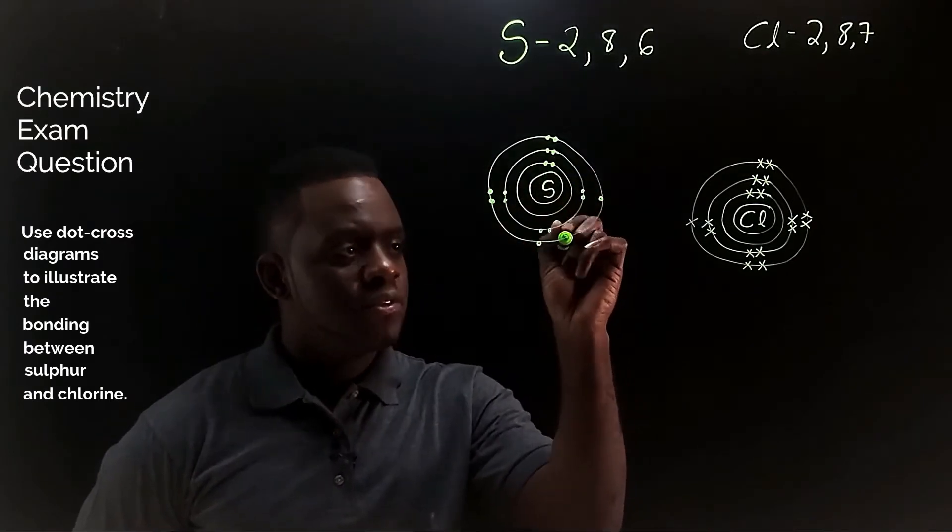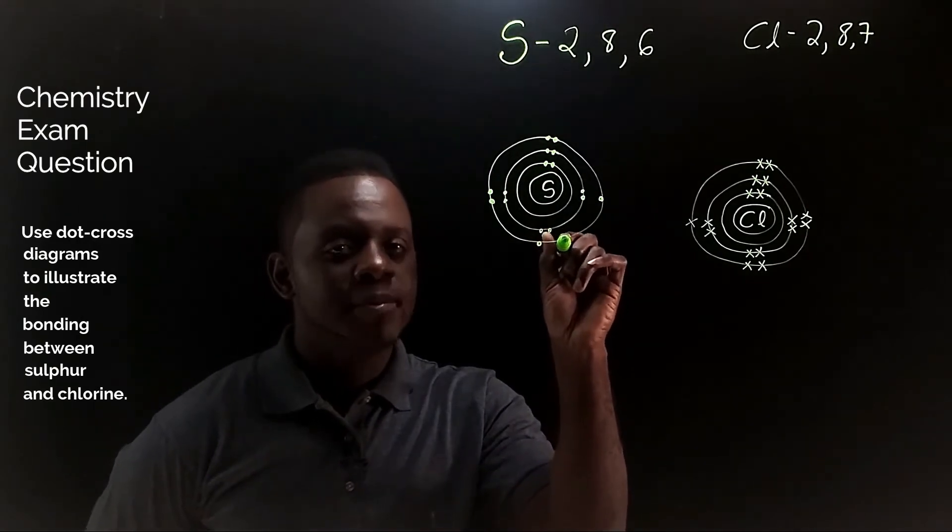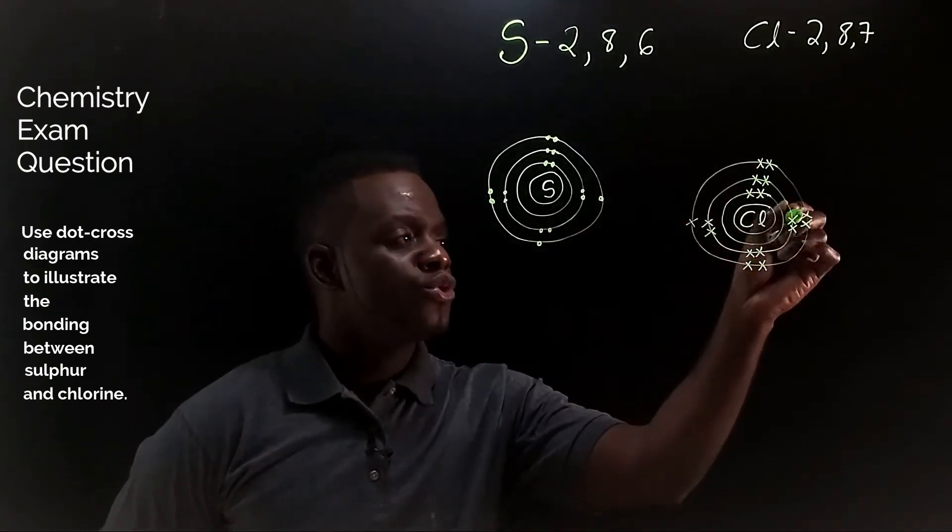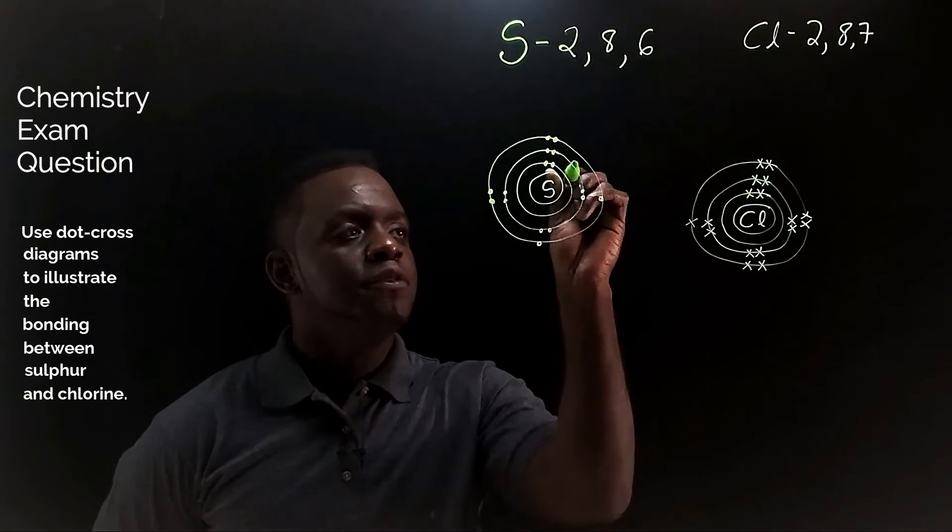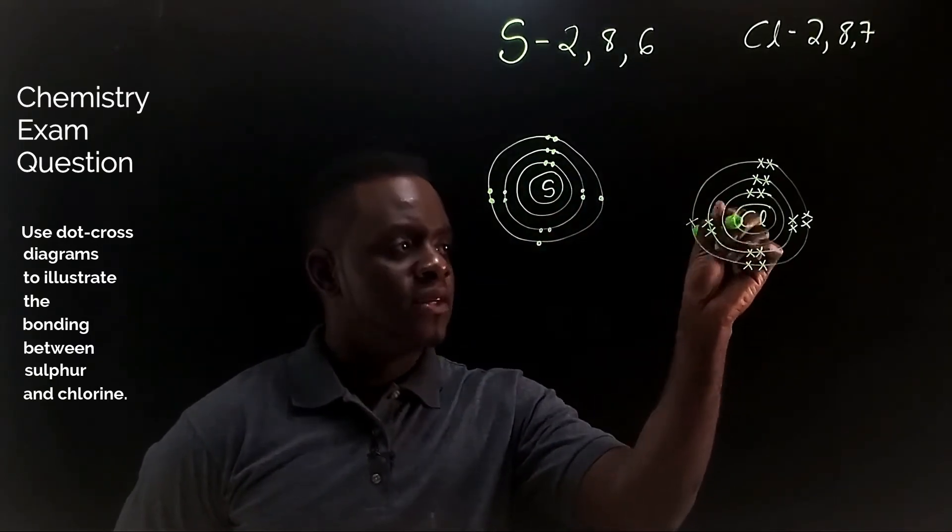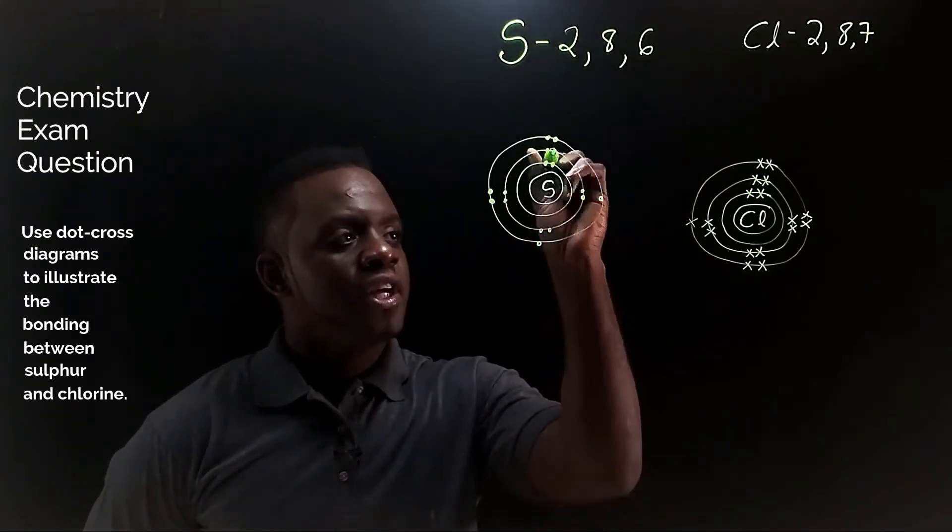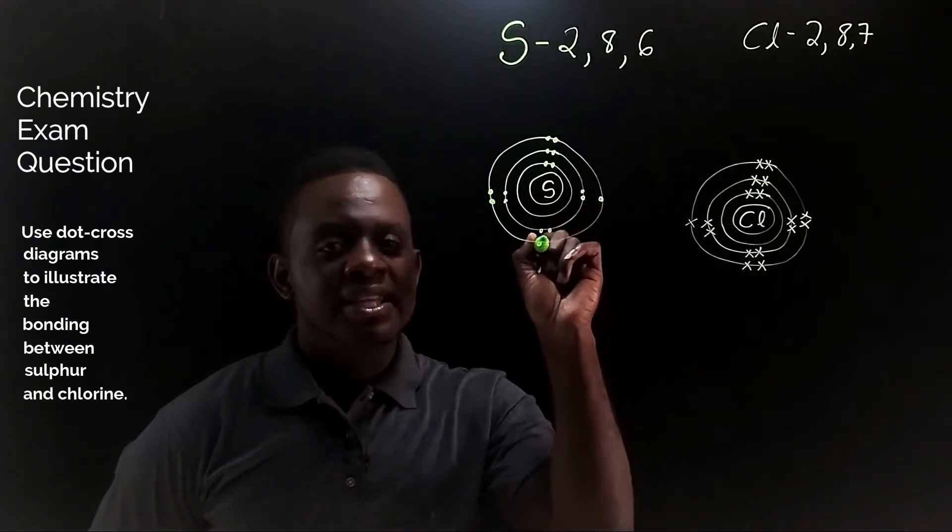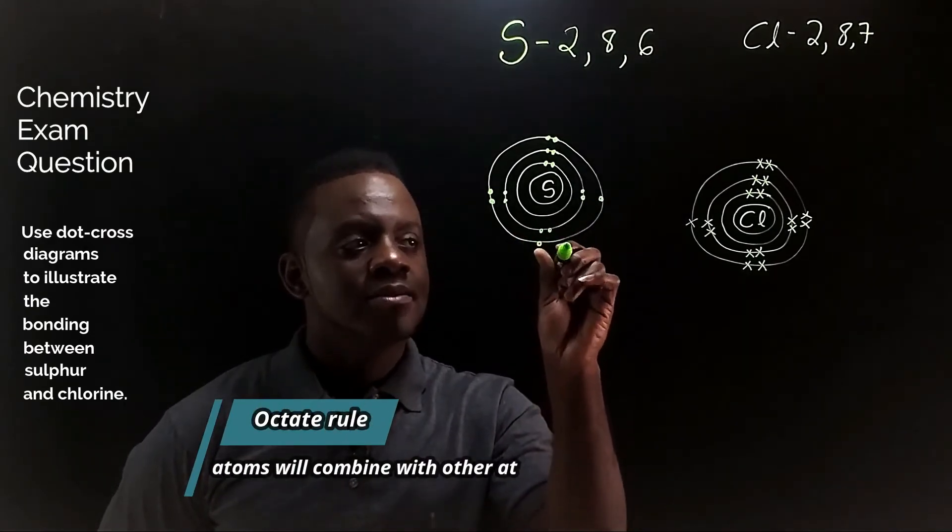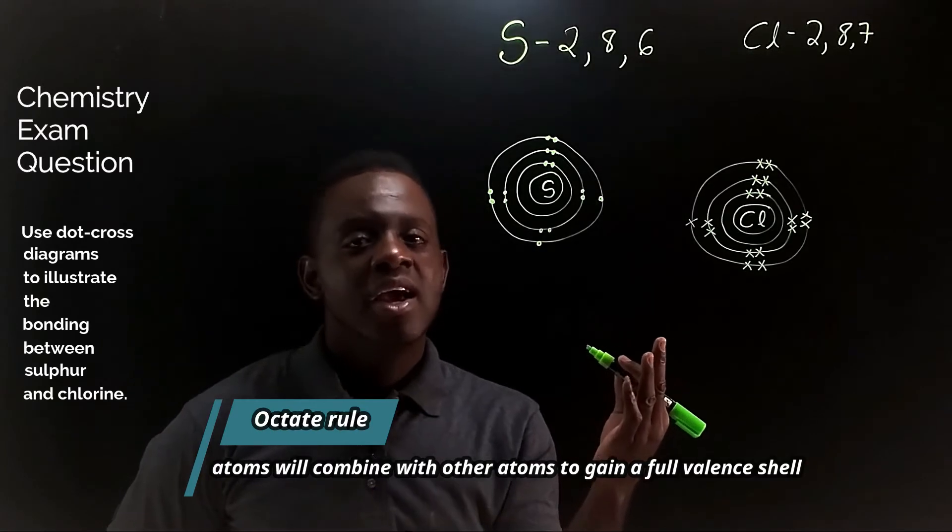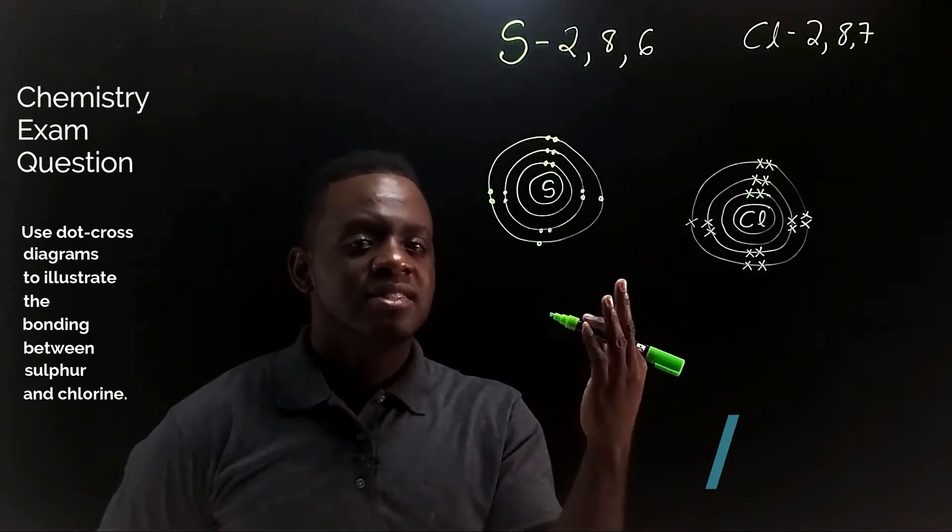The outer shell for sulfur, the valence shell is not full. The same is true for chlorine. Sulfur needs two more electrons to have a full outer shell and chlorine atom needs one electron. Because the outer shell is not full, the atom is in an unstable state. So the reason for which atoms participate in chemical bonding is to gain a stable electronic configuration or a stable state.